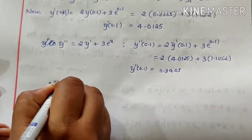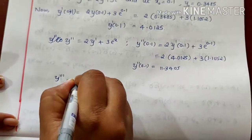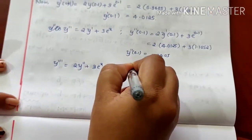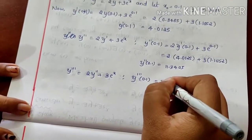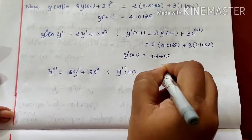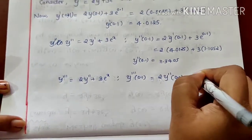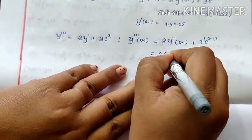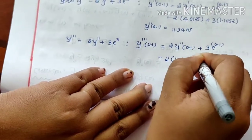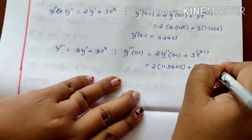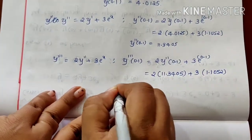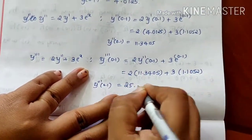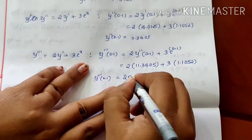For y triple dash, when you differentiate, it is 2 times y double dash plus 3 into e raised to x. So y triple dash of 0.1 is equal to 2 times y double dash of 0.1 plus 3 times e raised to 0.1. This is 2 times 11.3405 plus 3 times 1.1052. When you calculate, y triple dash of 0.1 becomes 25.9965.